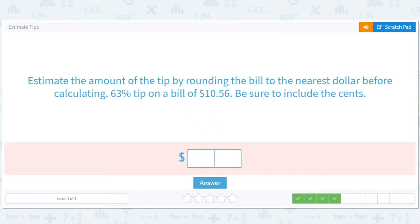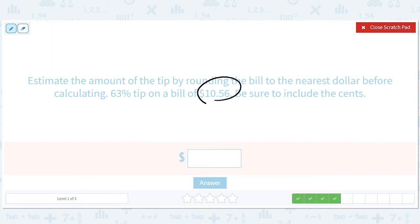Estimate the amount of the tip by rounding the bill to the nearest dollar before calculating. 63% tip on a $10.56 bill. See, that makes us sad. We wish that were like $10.49 and we could round to $10. But now we have to go to $11. $11 is way harder to work with than $10. So, we have, well, I'm being dramatic. It's not that much longer. 0.63, 11.